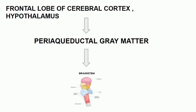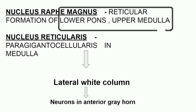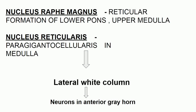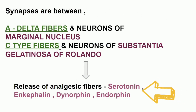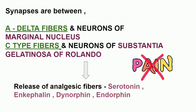The peri-aqueductal gray matter descends to the brain stem. The brain stem involves the lower pons and upper medulla. The nucleus raphe magnus is in the lower pons, and the nucleus reticularis is in the medulla. From these nuclei, the pain impulse descends. This pathway is called the endogenous opioid system.